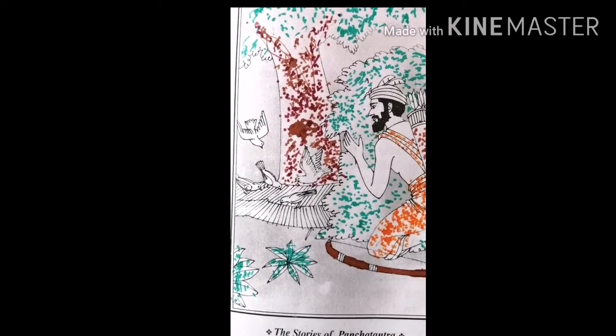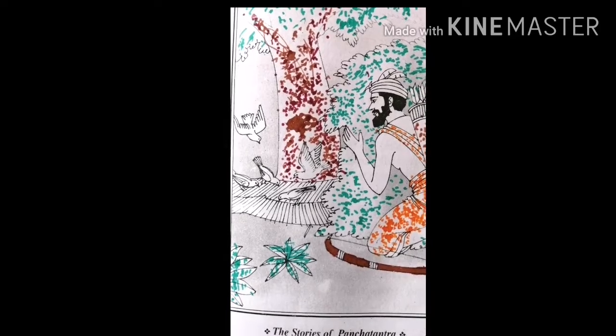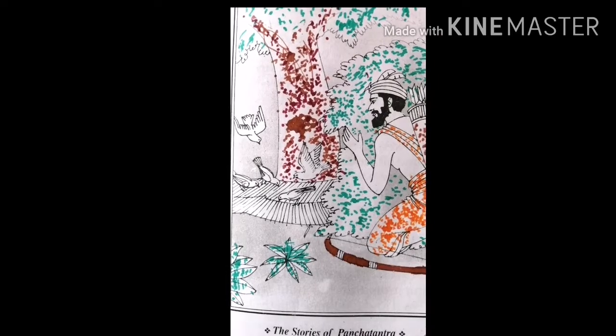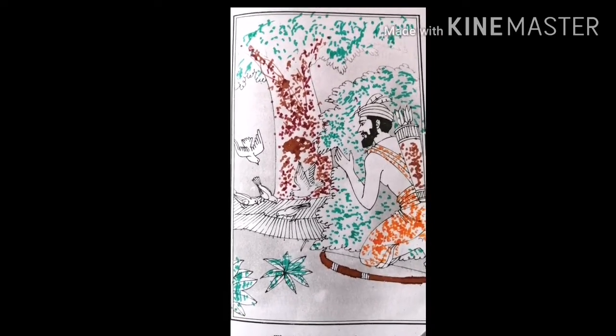Then the king of doves, Chitragreeva, said, Dear friend, I am Chitragreeva. Hearing these words, Hiranyaka came out of the hole rapidly and saw the king and other doves.